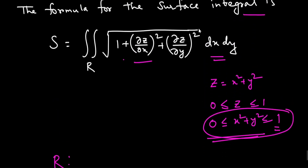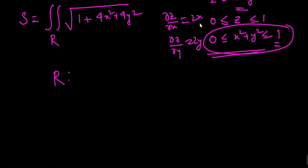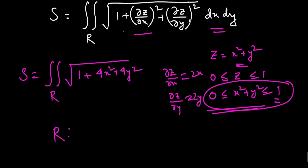Since z = x² + y², we compute ∂z/∂x = 2x and ∂z/∂y = 2y. So we can write S = double integral over R of √(1 + (2x)² + (2y)²) dx dy, which equals the double integral of √(1 + 4x² + 4y²) dA.